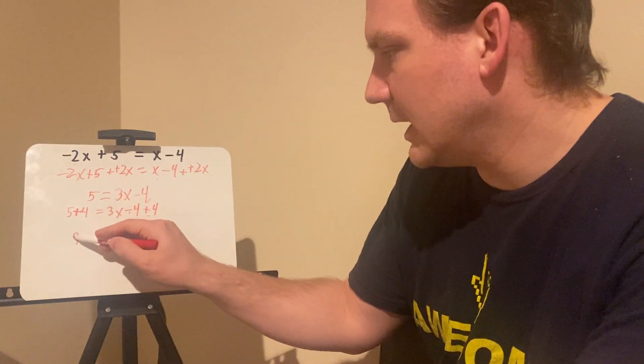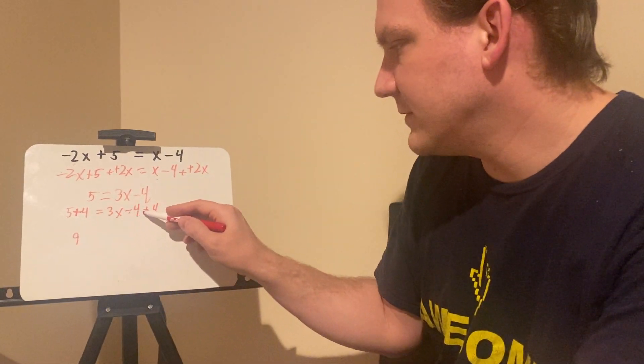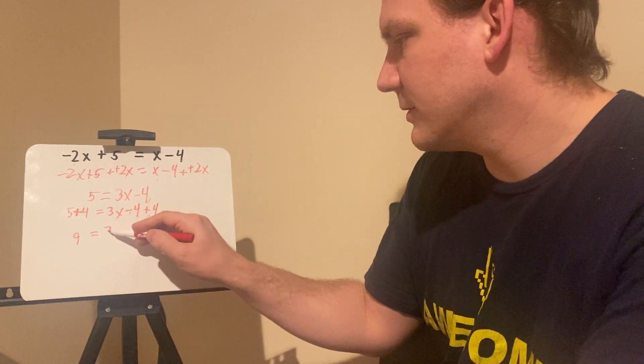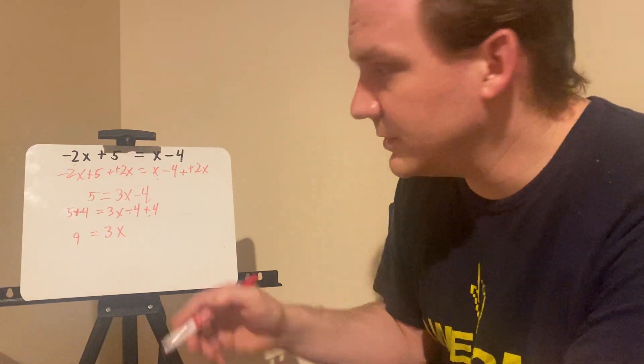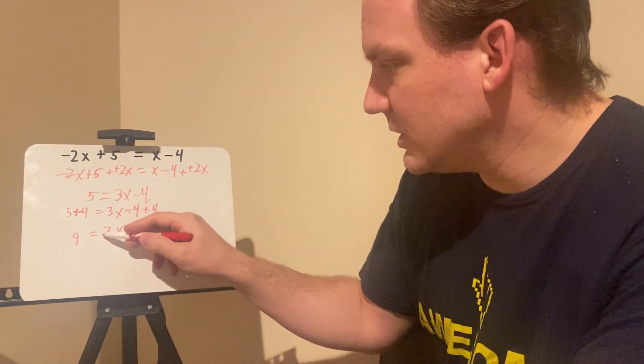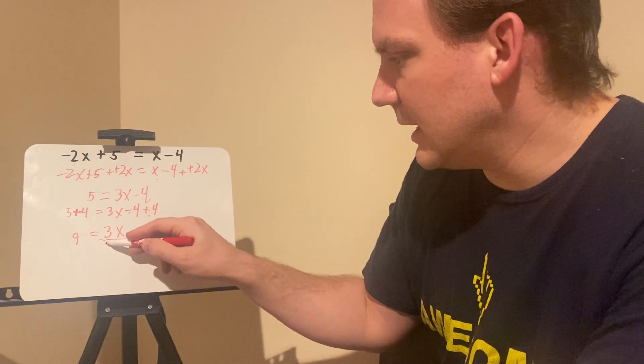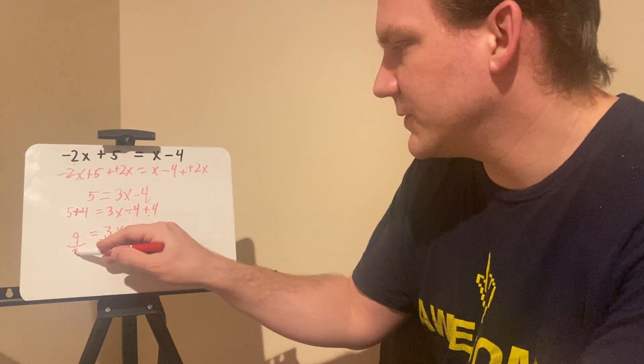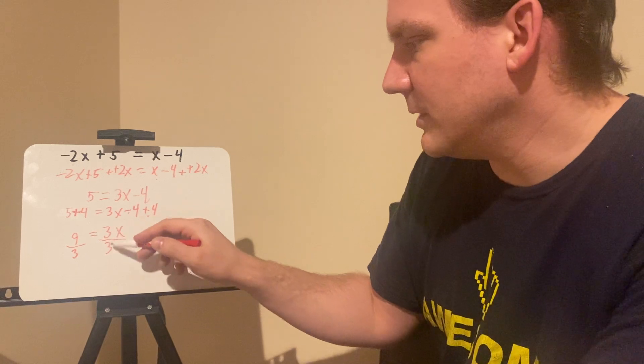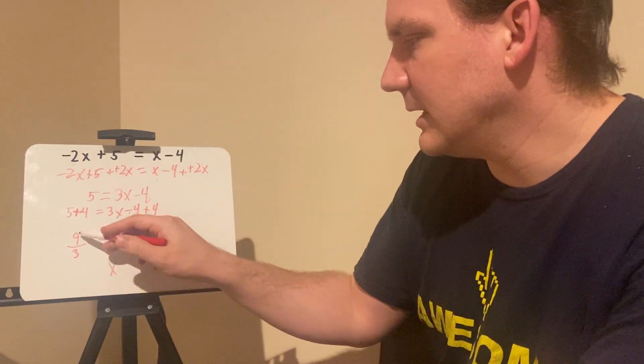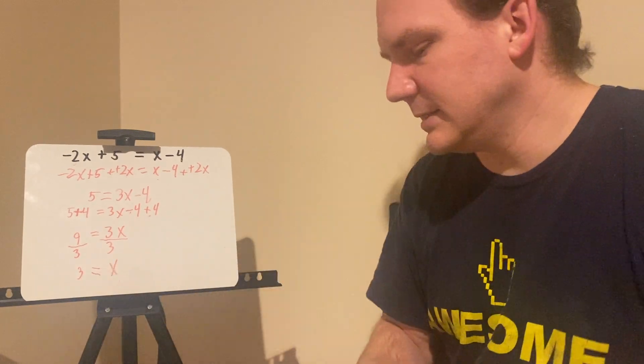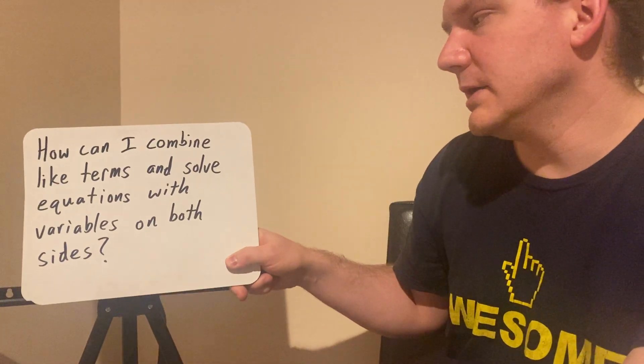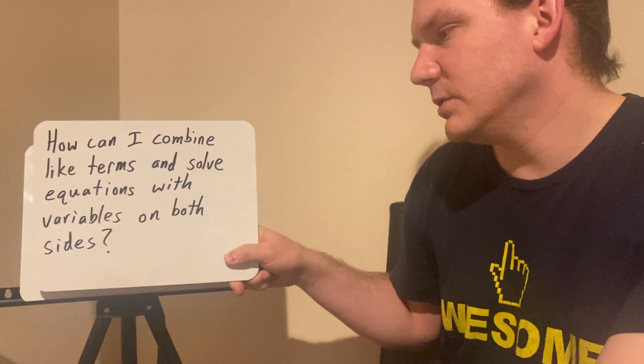Minus 4 plus 4 is zero. So 9 equals 3x. And this works out really nice. These are easy ones to do because my inverse operation for multiplication is division. So I divide 3x by 3. And I have to do the same thing to both sides of the equation. 3x divided by 3 is x. Nine divided by 3 is 3. And x ends up equaling 3. So now I've shown you how I can combine like terms and solve equations with variables on both sides.